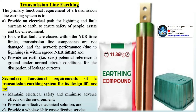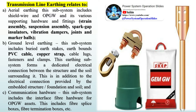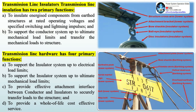Provide an earth zero potential reference to ground. Secondary functional requirements of a transmission earthing system are to maintain electrical safety, minimize adverse effects on the environment, and provide an effective technical solution. Transmission line earthing relates to aerial earthing. This subsystem includes shield wire and OPGW with various supporting hardware and fittings, strain assembly, suspension assembly, spark gap insulators, vibration dampers, joints, and marker balls. Ground-level earthing includes buried earth stakes, earth-bonded PVC cable, copper strap, cable lugs, fasteners, and clamps. Communication hardware includes interface fiber hardware for OPGW assets, such as fiber splice boxes and fiber termination boxes.